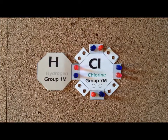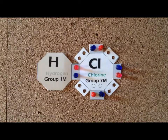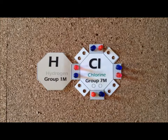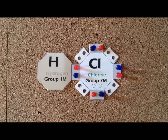Hydrogen chloride has the chemical formula HCl. If we dissolve this gas into water, we then call the resulting product hydrochloric acid. It is one of the important strong acids.